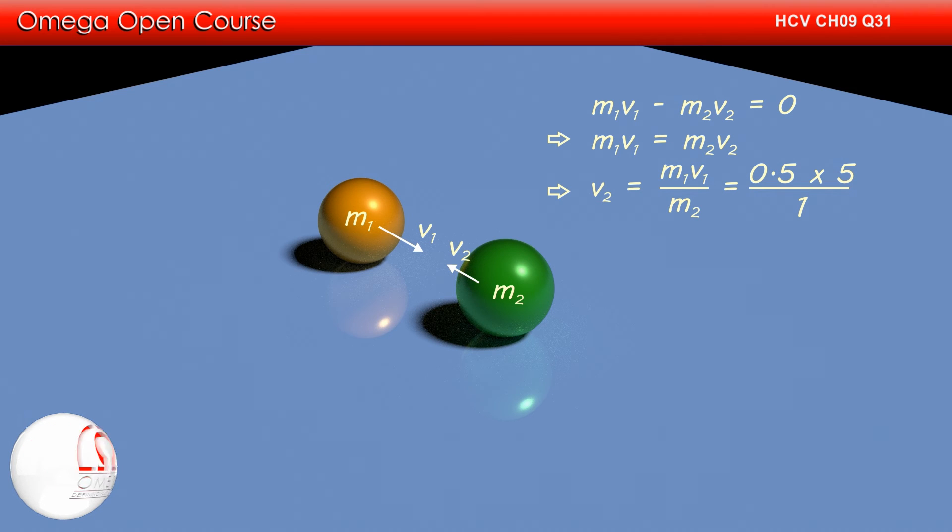Putting the values, we get v2 is equal to 0.5 into 5 divided by 1, or v2 is equal to 2.5 meters per second. This is our answer.